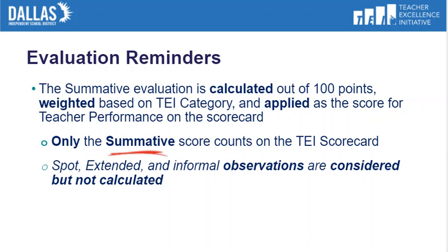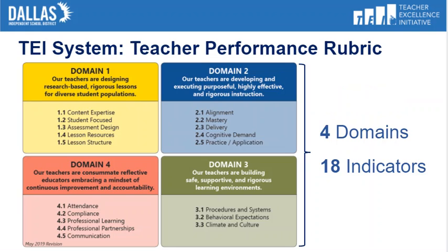Spots are undifferentiated based on effectiveness levels. A novice teacher or new to the district will receive a minimum of eight spots. Those who are proficient receive a minimum of six, and a distinguished teacher has a minimum of four spot observations. All teachers receive an extended observation. A reminder that the scores on the observation are not averaged for your summative. Here is the performance rubric — I would suggest that you make yourself comfortable and understand what components your administrator is looking for when they come in to do your spots and or your evaluation.